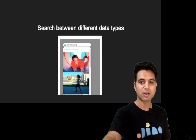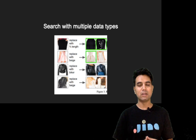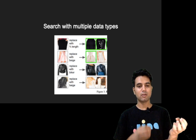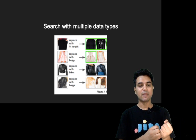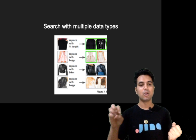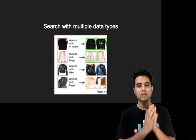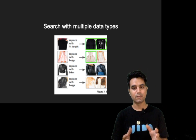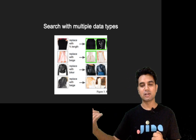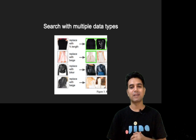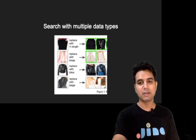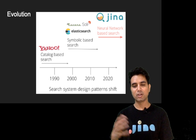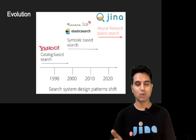We can also use multiple data types simultaneously in a query — for example, providing an image plus some text. Say I give the search system an image of a skirt and text saying 'replace this with 3/4 of this length.' The system takes those two data types together and returns images of skirts matching that criteria. That is another powerful capability we gain using neural search.